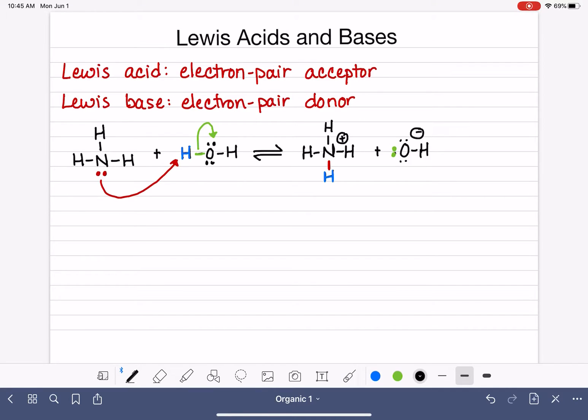So in the Bronsted-Lowry method, we can make a note over here. Bronsted-Lowry method, an acid is an H-plus donor. And in the Bronsted-Lowry method, a base is the H-plus acceptor.